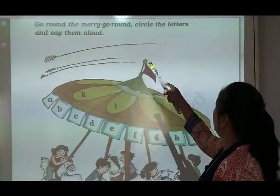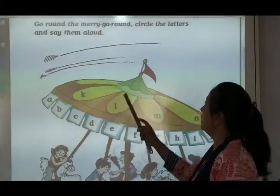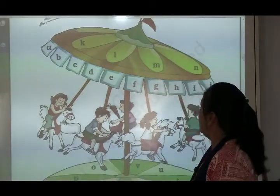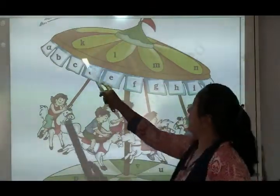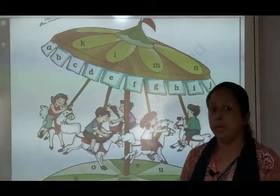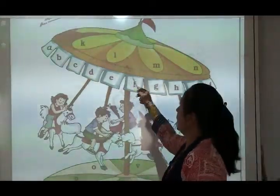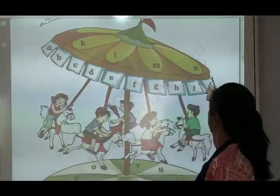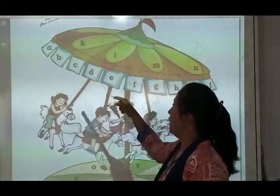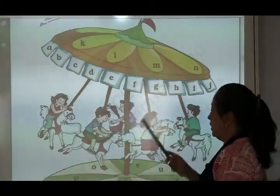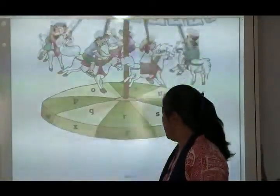Go round the merry-go-round and circle the letters and say them aloud. This is a picture of merry-go-round — उस पे सब letters हैं, small letters. अब आपको उसको read करना है और हर एक letter पे circle करना है — like K, L, M, N, A, B, C. Read करते जाना है A to Z और उसके ऊपर circle करना है. तो यहाँ पे आपका यह poem finish होती है.